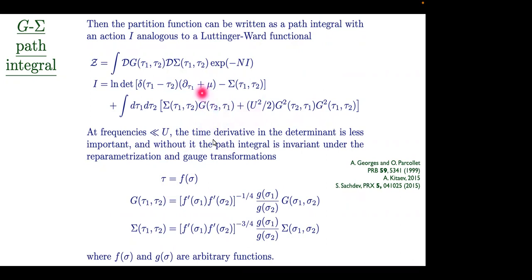The only place where some memory of the underlying fermions is present is in this term right here — the d/d-tau that came from the kinetic energy term for the fermions. At low frequencies, this term can be neglected. If you throw out that term, the remaining action has a huge emergent symmetry that the original model didn't have: a complete symmetry under time reparametrizations and gauge transformations.